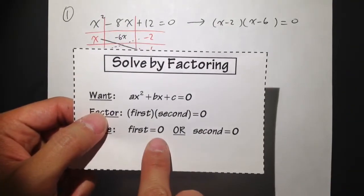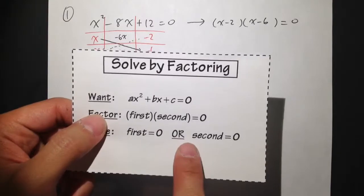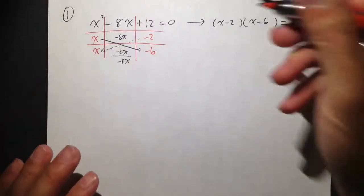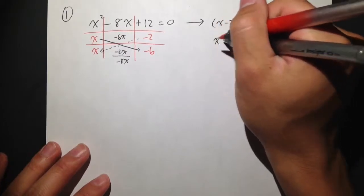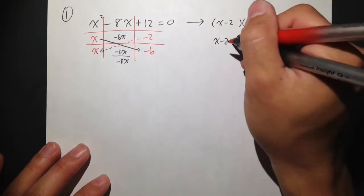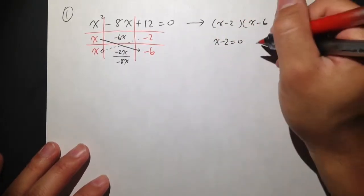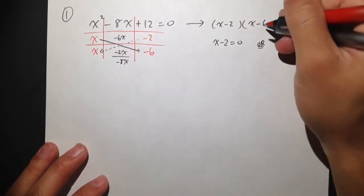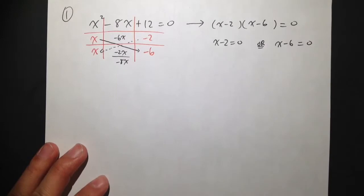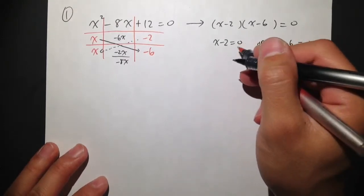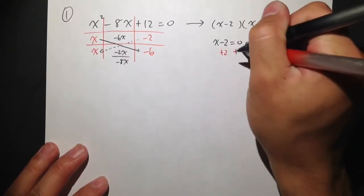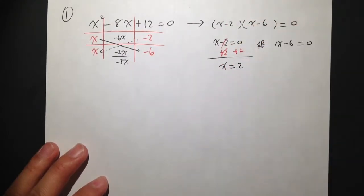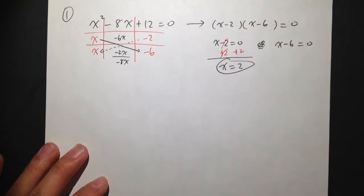You set the first parenthesis equal to zero, or you set the second parenthesis equal to zero, and then solve each one. For the first: x minus 2 equals zero. We just need to add 2 on both sides — straightforward — and we get x is equal to 2. That is one of our answers.